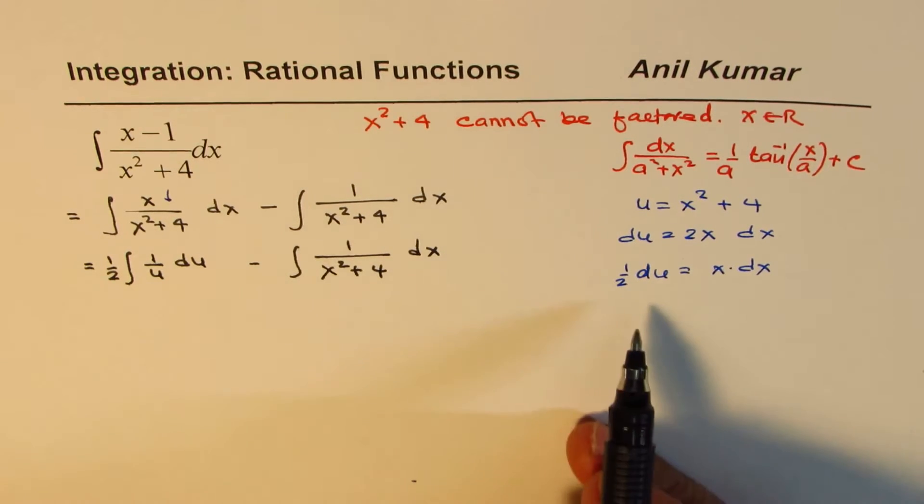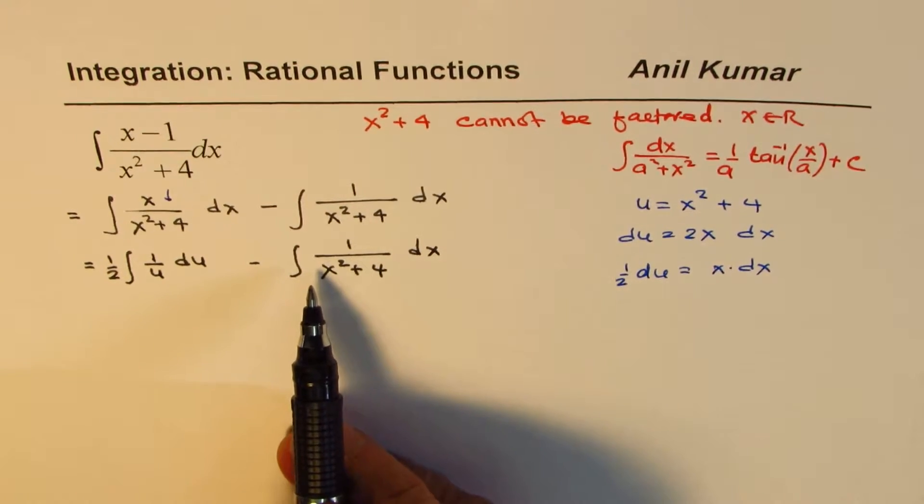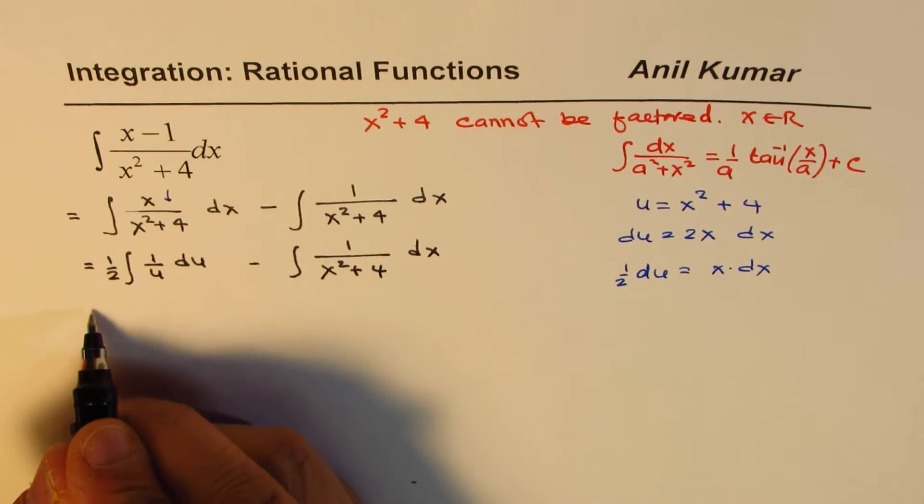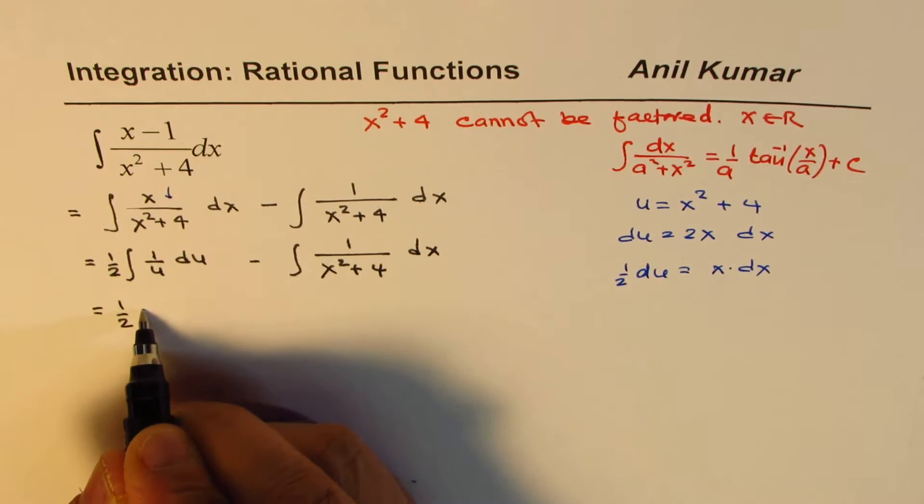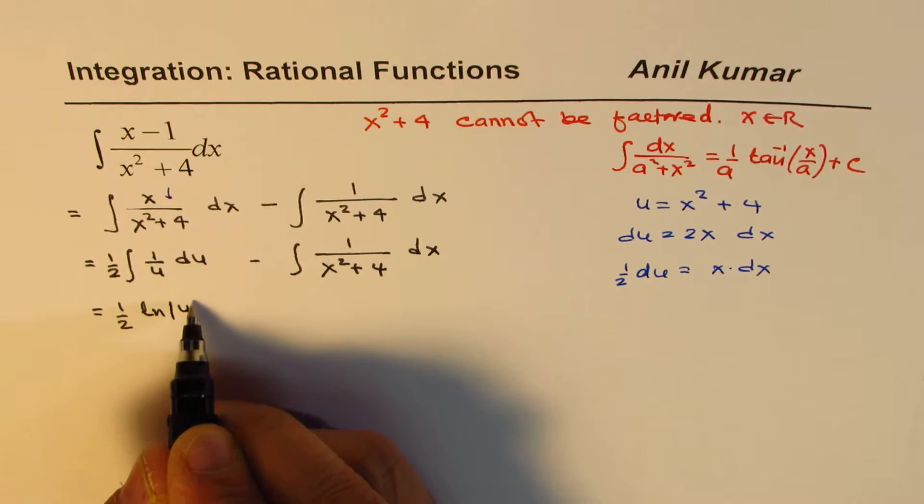In fact, you should do this separately and then write down your result here. Anyway, just one more step here. So, 1 over u is ln. So, we have ln absolute value of u.